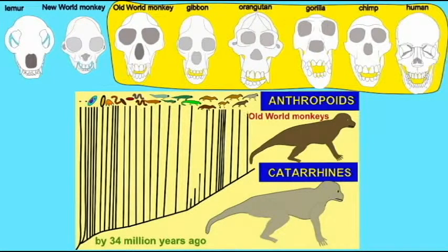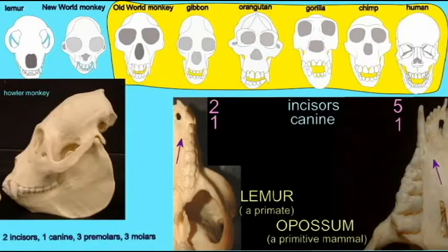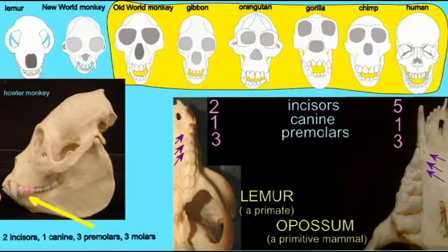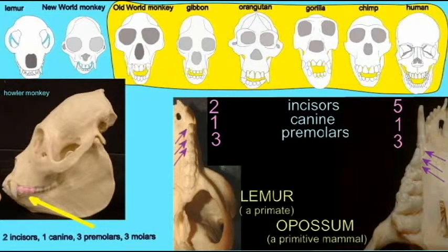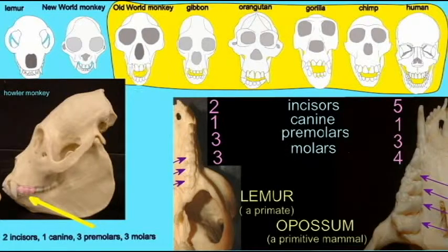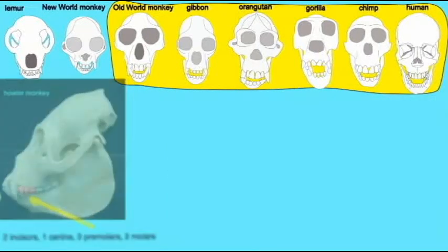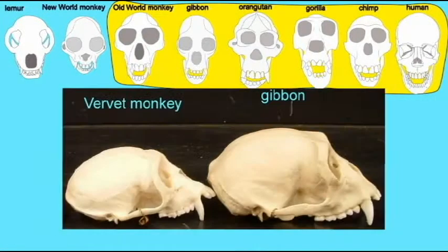Perhaps the most visible difference is that their tooth formula was reduced by one, because while anthropoid primates ancestrally possessed three premolars — as do the New World monkeys today — the Catarrhine primates only possessed two.